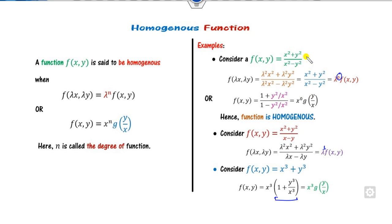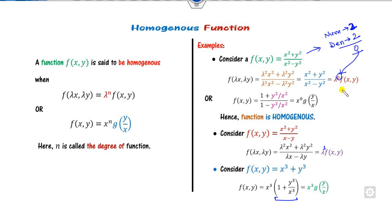How can you identify the degree? Look at the degree of the numerator and denominator. The degree of the numerator is 2, the degree of the denominator is 2, so the net result is 0. In another case, degree of numerator is 2 and denominator is 1, so 2 minus 1 gives degree 1. If there is no denominator, the degree is just the degree of the numerator, such as 3.